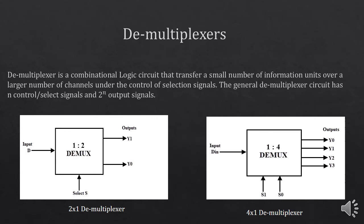A demultiplexer is opposite to that of a multiplexer. It is a combinational logic circuit that transfers a small number of information over a large number of channels under the control of selection signals. The general demultiplexer circuit has n control or select signals and 2^n output signals. A 1x2 demultiplexer has one input line and two output lines, while a 1x4 demultiplexer has one input data pin and four output lines.